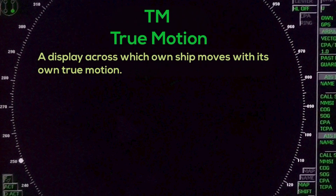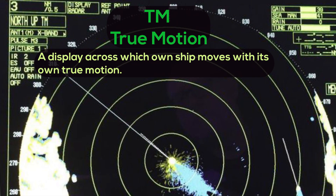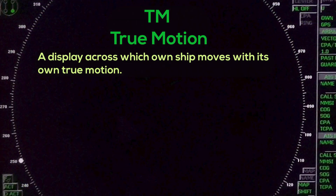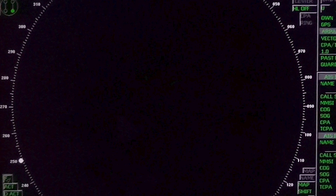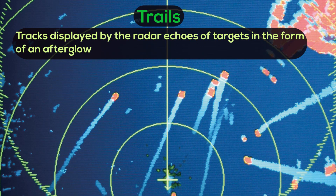TM – True Motion: A display across which the own ship moves with its own true motion. Trails: Tracks displayed by the radar echoes of targets in the form of an afterglow.